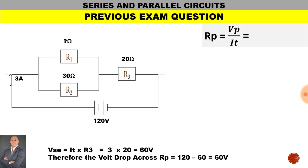Now that we have the parallel voltage, we can determine the resistance of the parallel branch. Resistance parallel equals VP over IT. Therefore, 60 volts divided by 3 amps gives us 20 ohms for the parallel branch.